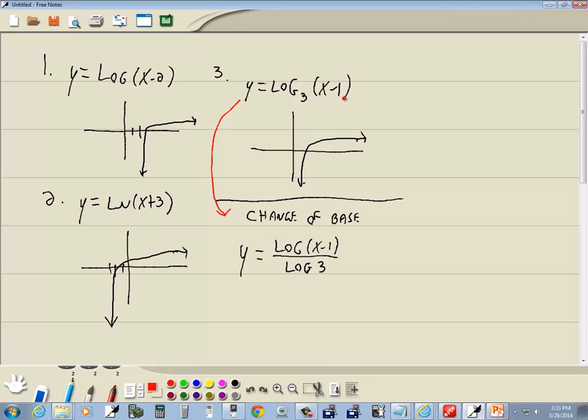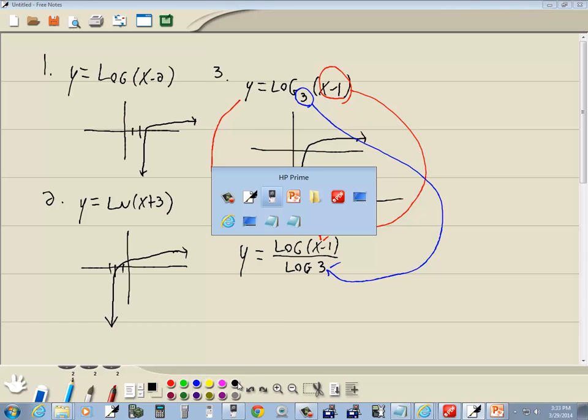Now the way it works is whatever follows the log right here always goes up on top. And then whatever your base is, whatever number is right here, is always what goes right down there. Now other than that, we kind of type in as you see it. So let's go look at that.